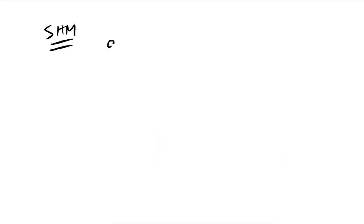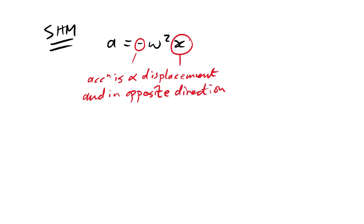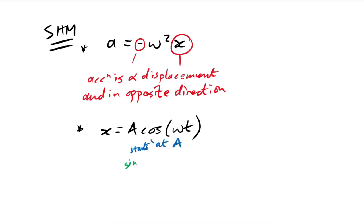For simple harmonic motion (SHM), the acceleration equation is a = −ω²x. The negative sign captures the definition of SHM: acceleration is proportional to displacement and in the opposite direction. The displacement equation is x = A cos(ωt) if starting at amplitude, or x = A sin(ωt) if starting at equilibrium (x = 0). Use the appropriate form based on what the graph shows.